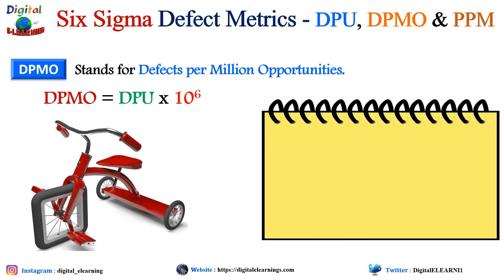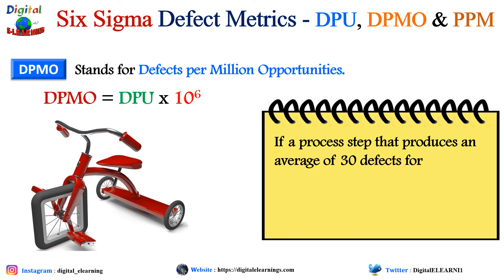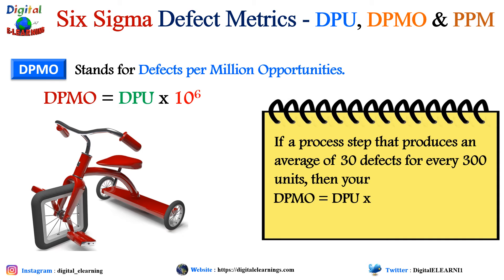Using the same case study with an average of 30 defects for every 300 units, DPMO equals DPU multiplied by 10 to the power of 6. Since DPU is 0.1, multiplying by 10^6 gives a DPMO of 100,000 (10 to the power of 5).